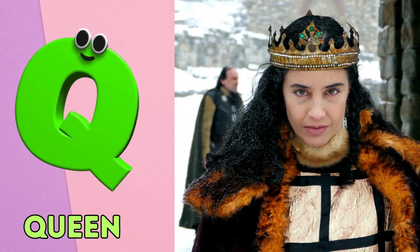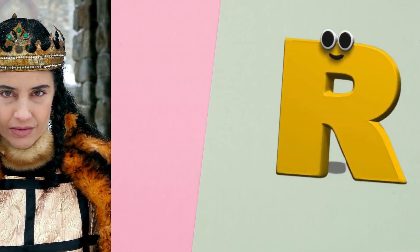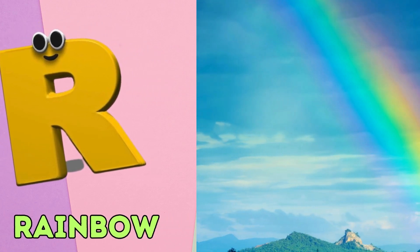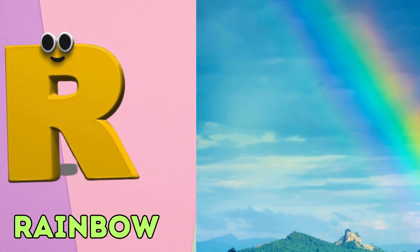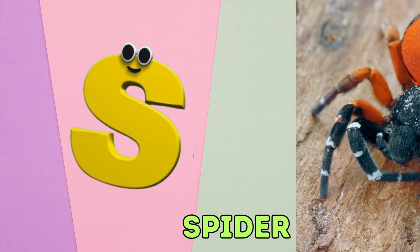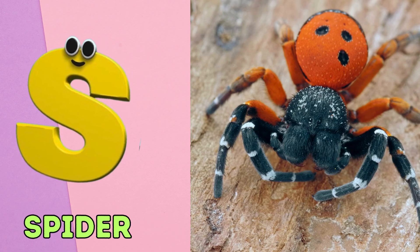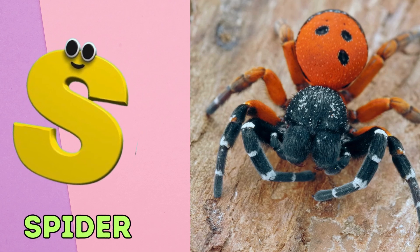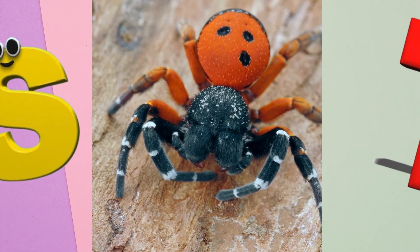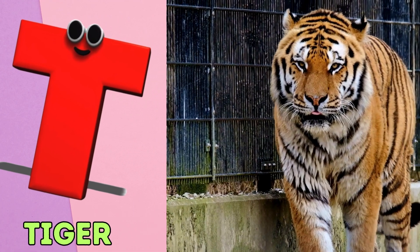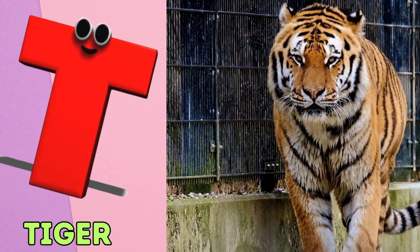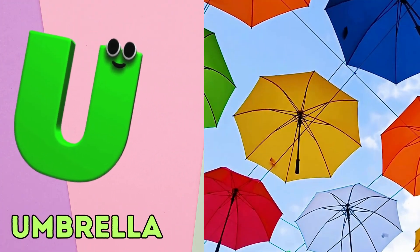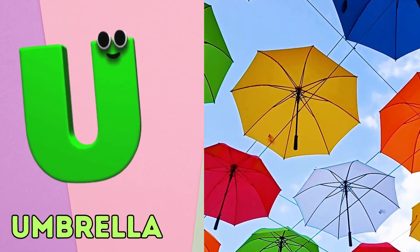Q is for Queen. Qu, Queen. R is for Rainbow. R, Rainbow. S is for Spider. Sh, Spider. T is for Tiger. T, Tiger.